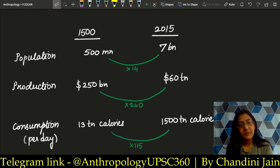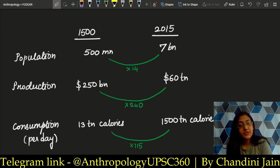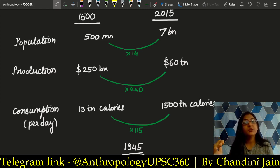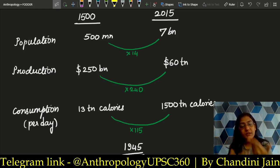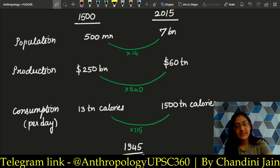In 1500 AD, the population was around 500 million, but today — about 6-7 years back, that is 2015 — it was 7 billion: a 14-fold population rise. But in production there was a 240-fold rise, and in consumption a 115-fold rise. The most basic thing to note here is that production increased, which is why we had to become consumers — hence the term consumerism. There was a lot of supply; demand was created through advertisements. That is how capitalism and imperialism work hand-in-hand.